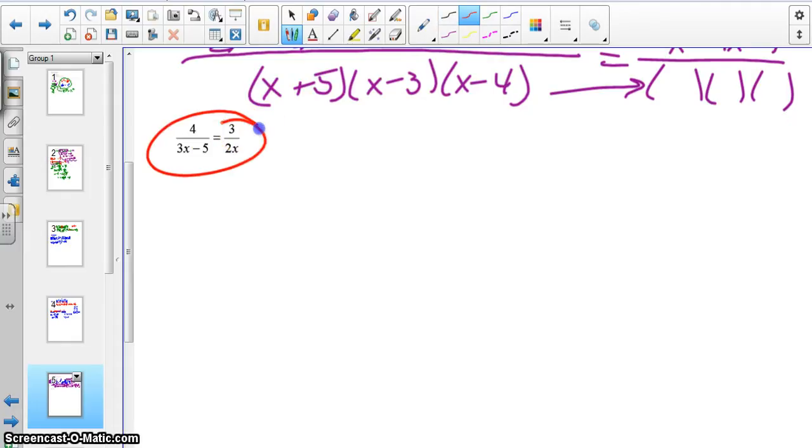Here, this is a proportion. And so any time you have two fractions equal to each other, you can do what is called cross multiplication. And then here we would get that negative x equals negative 15, and so x equals 15.